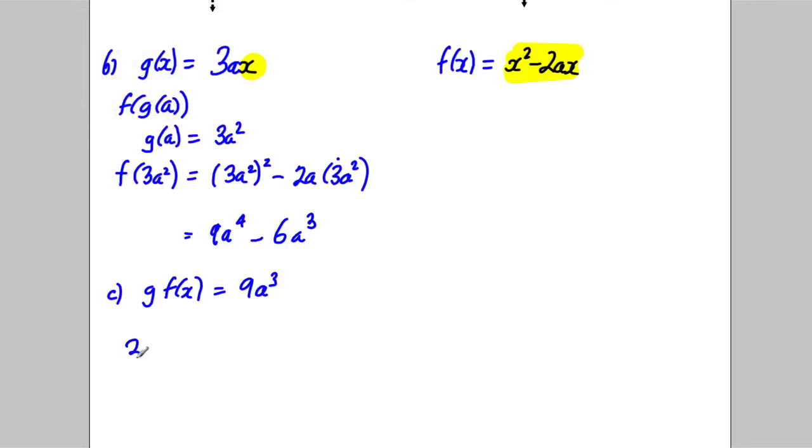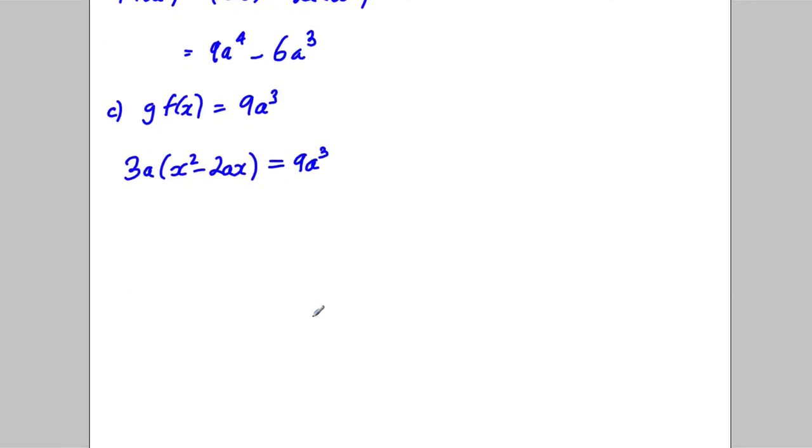So we're going to solve 3a(x² - 2ax) = 9a³. Let's expand it. Well, we could divide both sides by 3a here. It would be a perfect move here. Divide both sides by 3a. So we get ourselves that x² - 2ax is going to be equal to 3a².